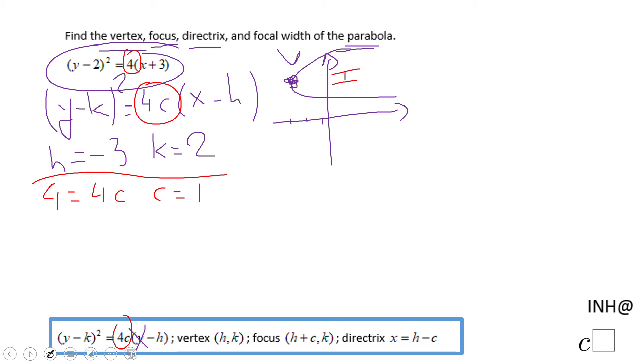So if the vertex is, like I said, (-3, 2), the focus, since I move one unit to the right, will be (-2, 2).